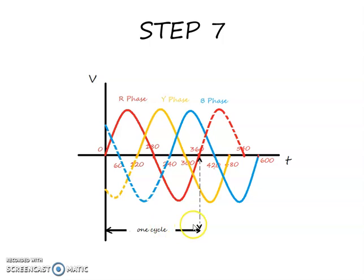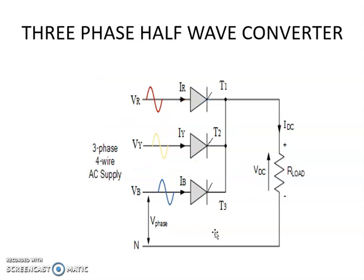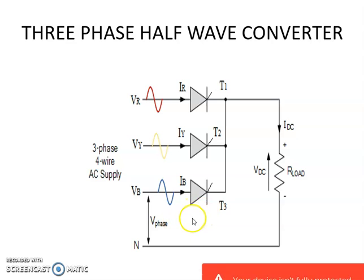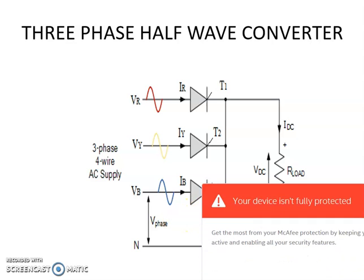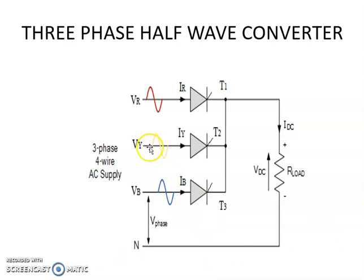When we go in for a half-wave converter or a full-wave converter we will be drawing the output waveform for one cycle only. In a three-phase half-wave converter we have three thyristors each connected to one phase: thyristor T1 connected to R-phase, thyristor T2 connected to Y-phase, and thyristor T3 connected to the B-phase.